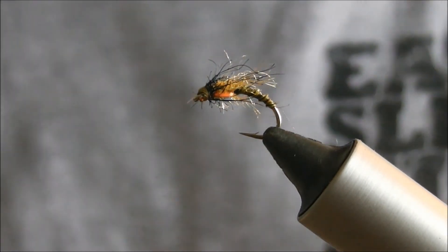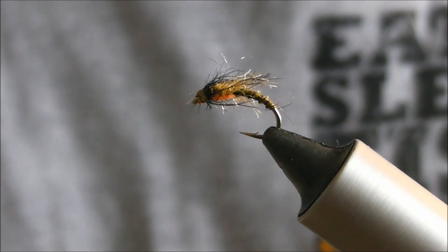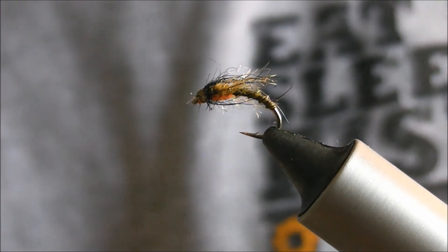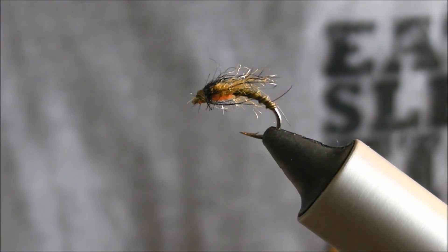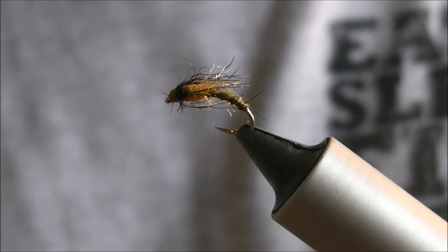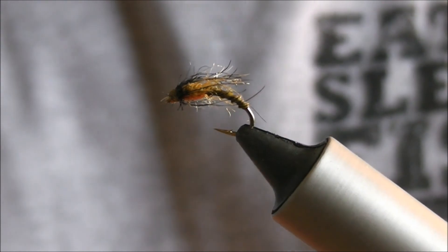Don't know what you call it, I call it a scruffy buzzer. Very effective this time of year. You can fish it really close to the surface, so if you gink it, it will just kind of hang in the surface like a CDC buzzer or an emerger.